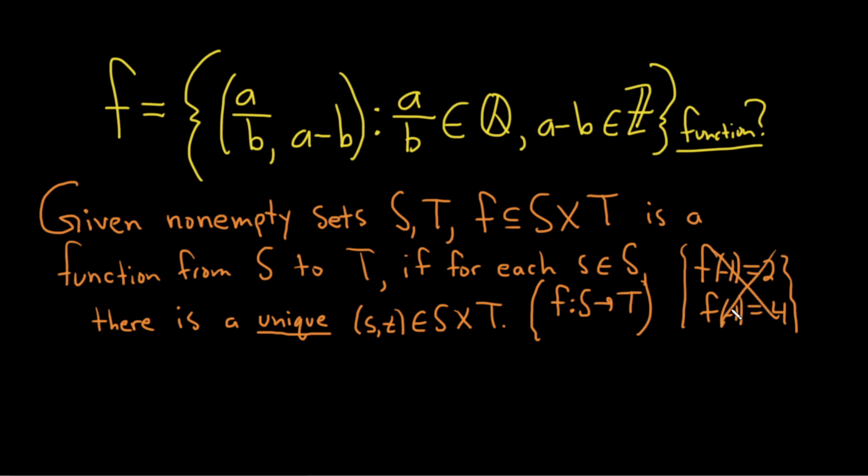And so in other words, it wouldn't be a function because you need to have it defined uniquely. So this is no good. Here we have the same element in the domain and two different elements in the codomain. No good. It needs to be unique.